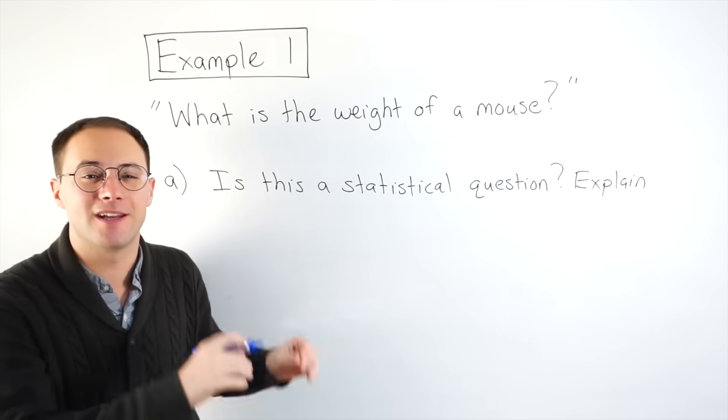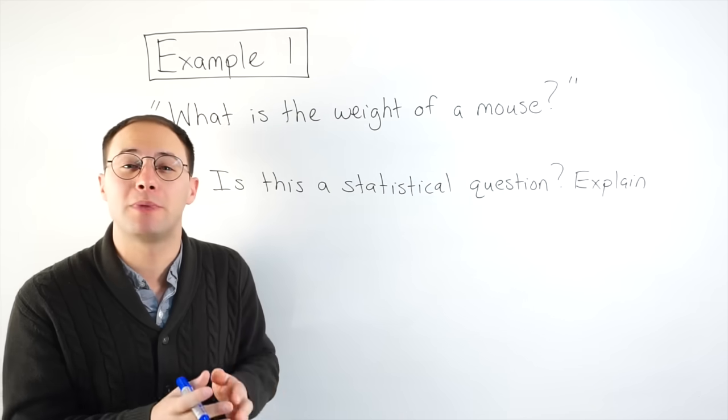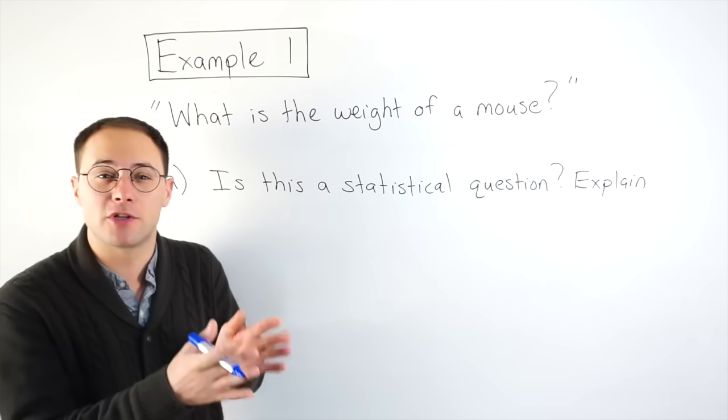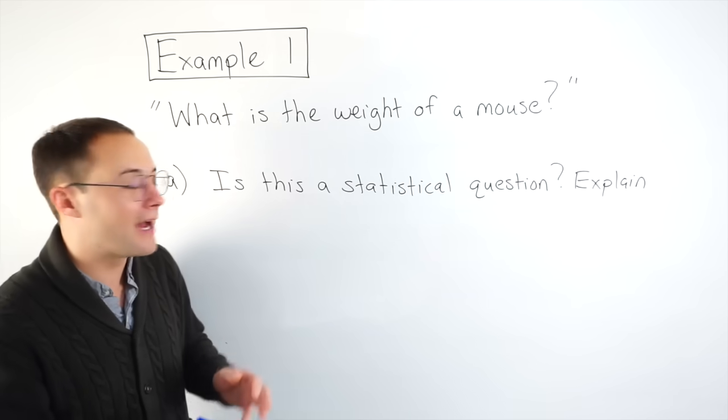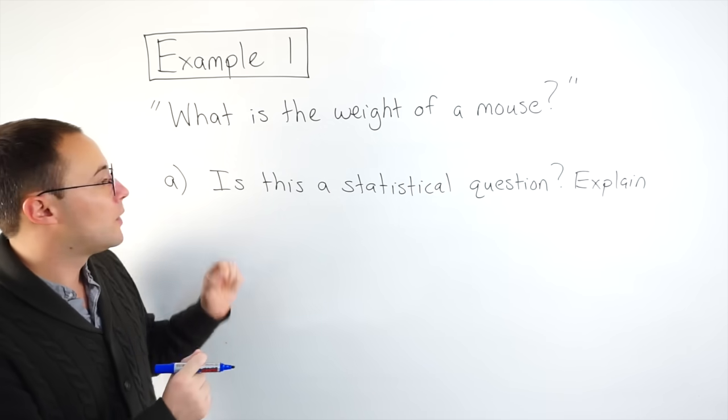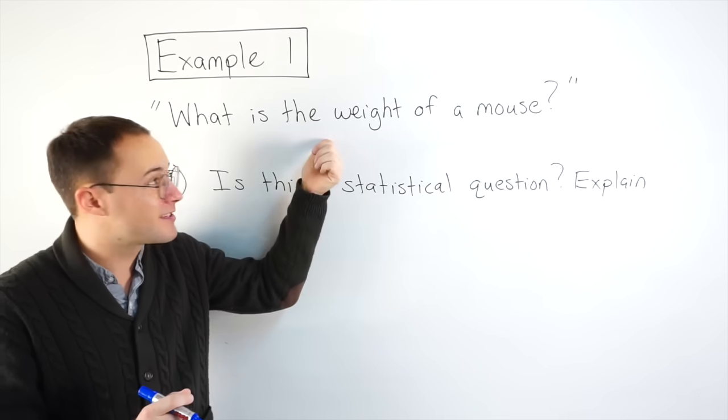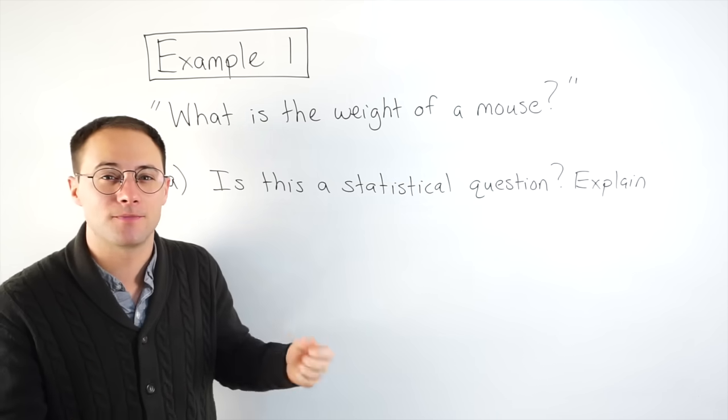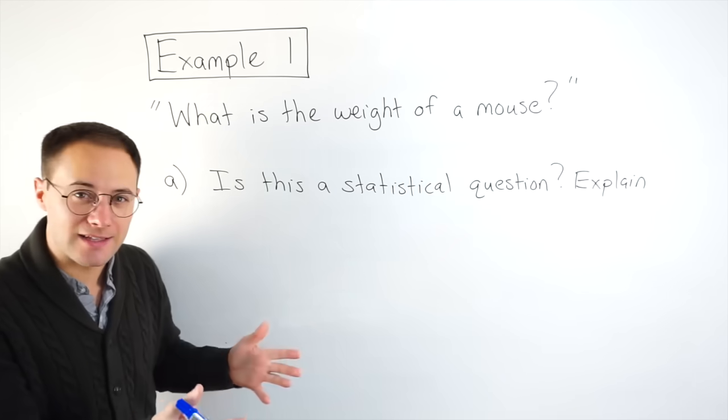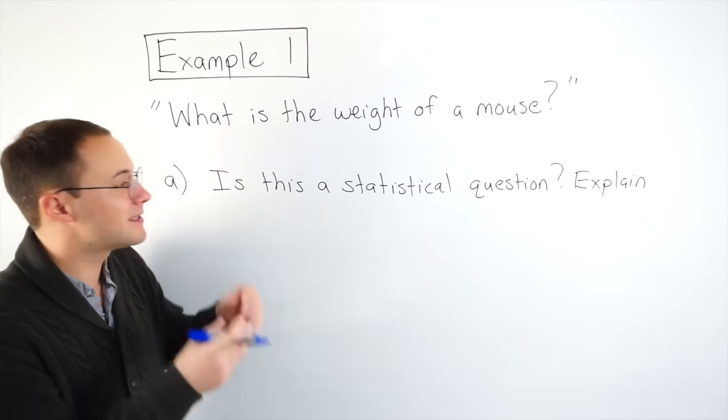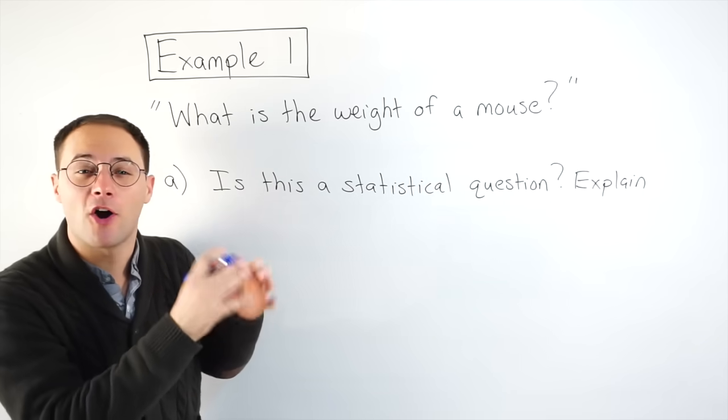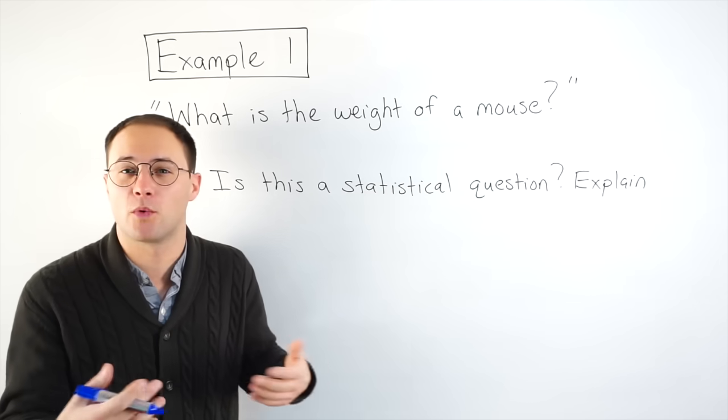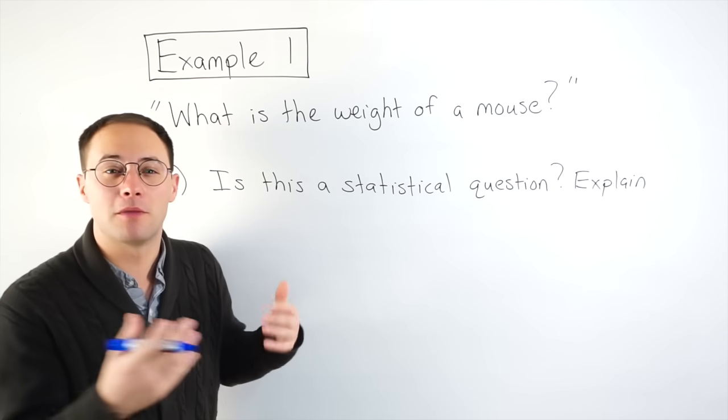Now, if you remember from the definition, statistical questions should be giving us a variety of answers. They should be able to show us the distribution and a tendency. So, we have to think, well, this question, if I'm doing an experiment with mice, is it going to give me a variety of answers? And the answer is, yes, it will, because you can't expect all mice to weigh the same. They're going to be different, just like humans are going to weigh different amounts, same with mice.